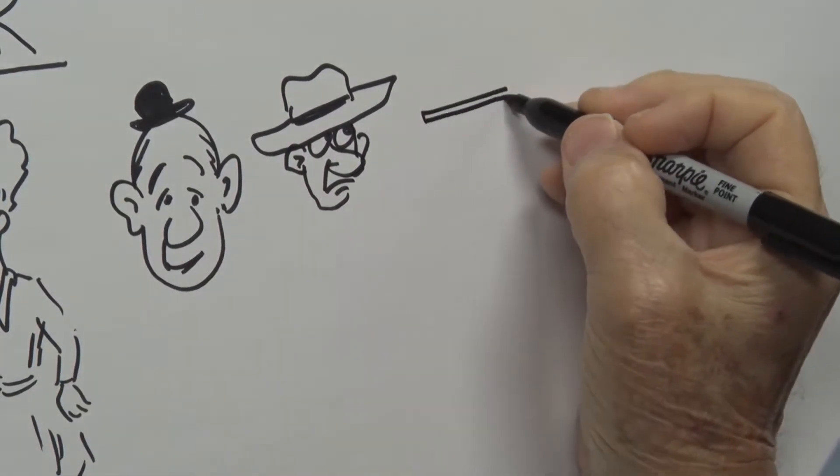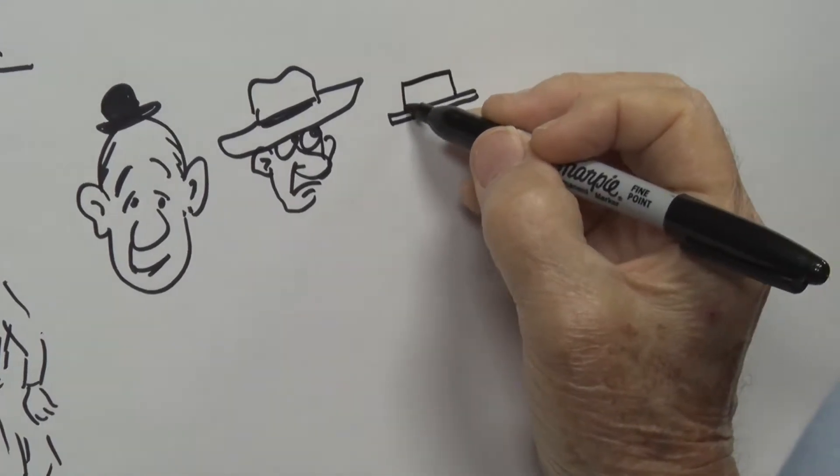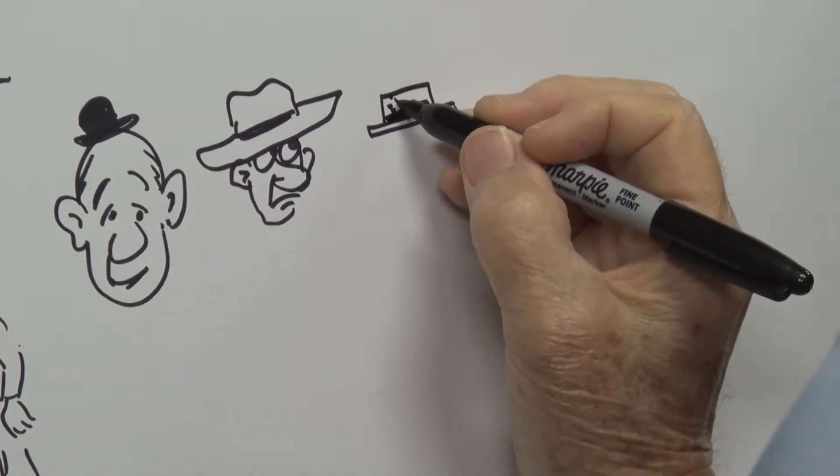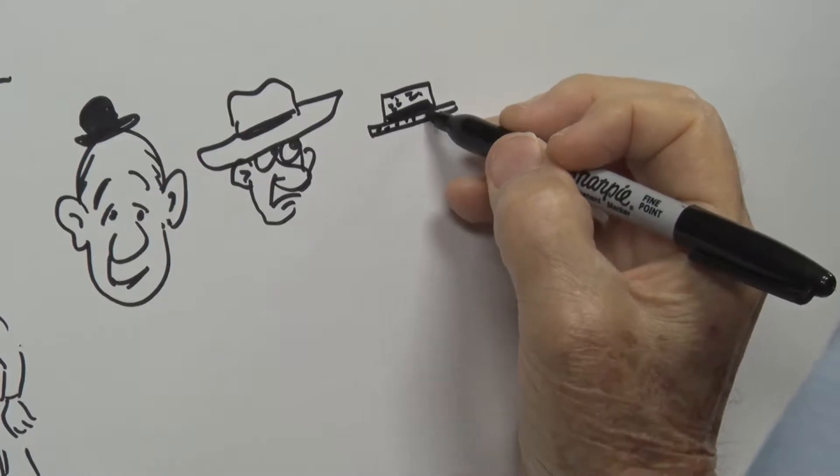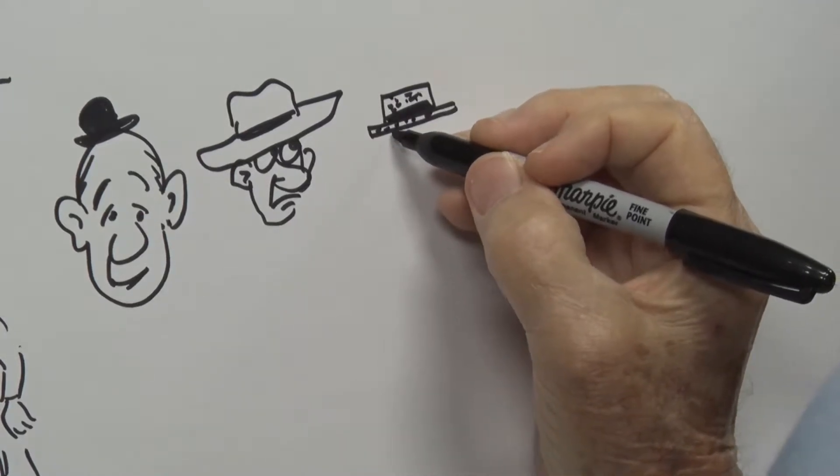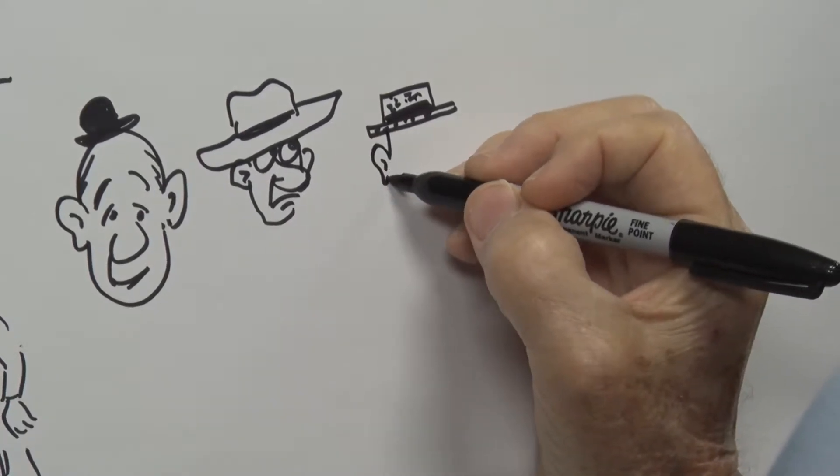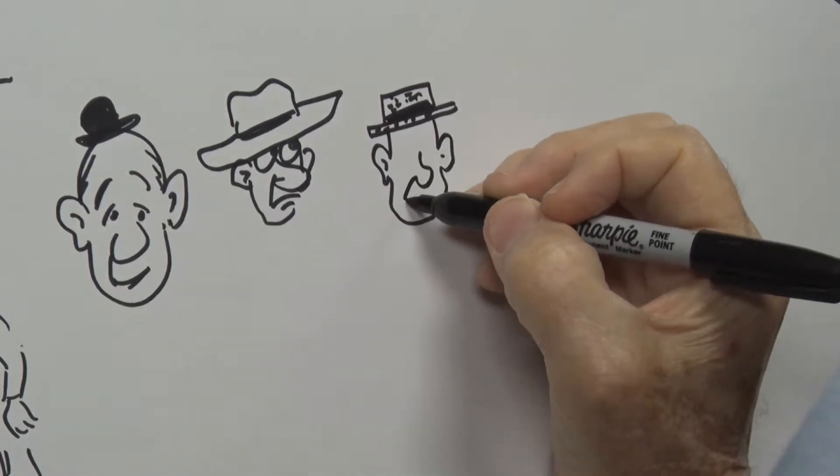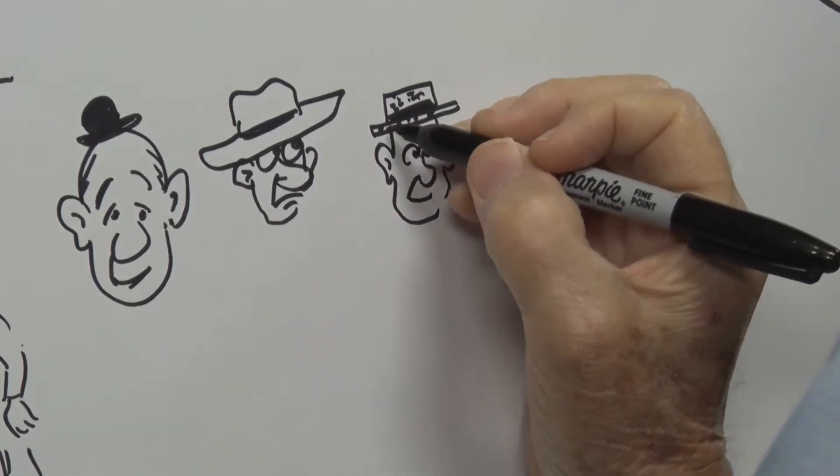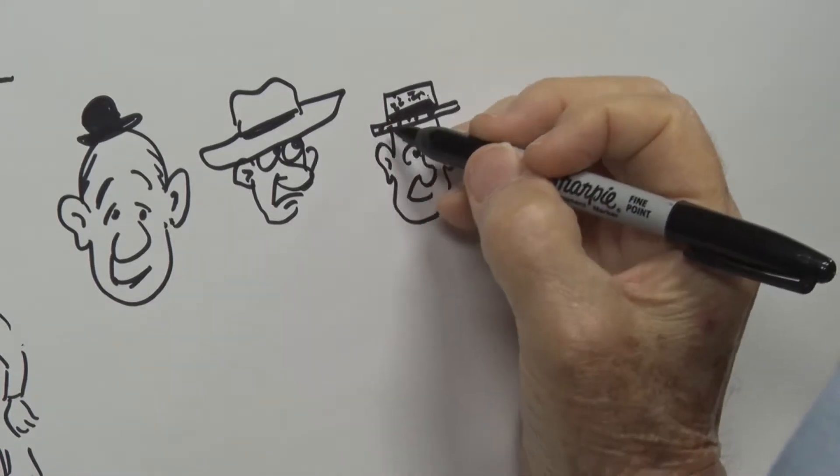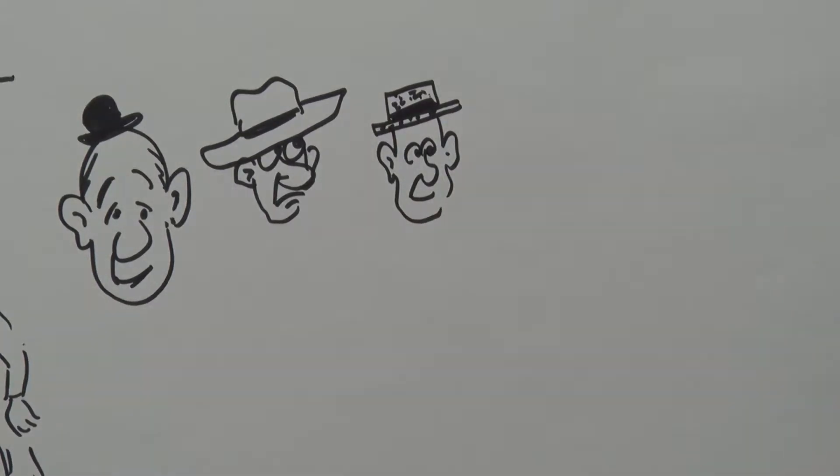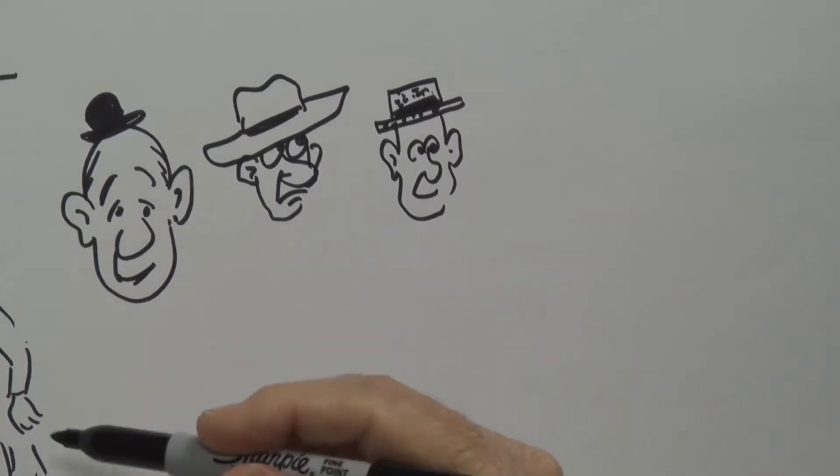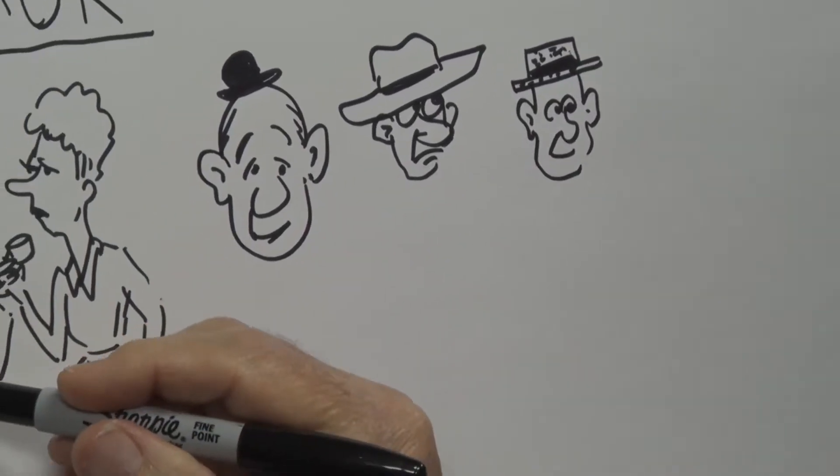Sometimes a cartoon character might have a hat that's way too big and so he can barely see where he's going. And then there's what I would refer to as old-fashioned hats. If you've ever seen a movie filmed back in the 1920s, you're likely to see some of the men wearing this kind of straw hat.